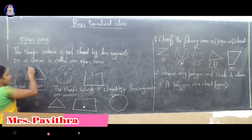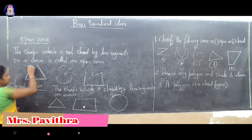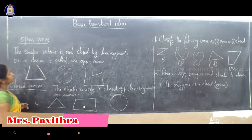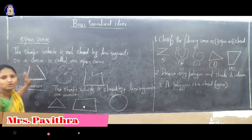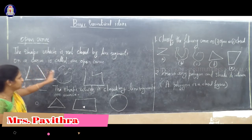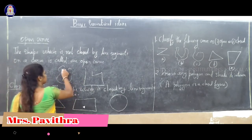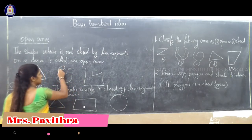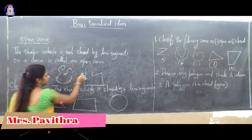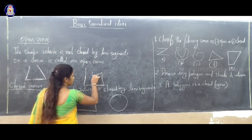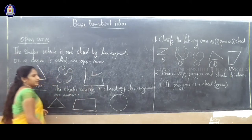For example, here are some figures. This is an open curve — an open figure. Is this shape closed? No, this is open curve. This is an example of open curve. This is also an example of open curve — it is not closed.